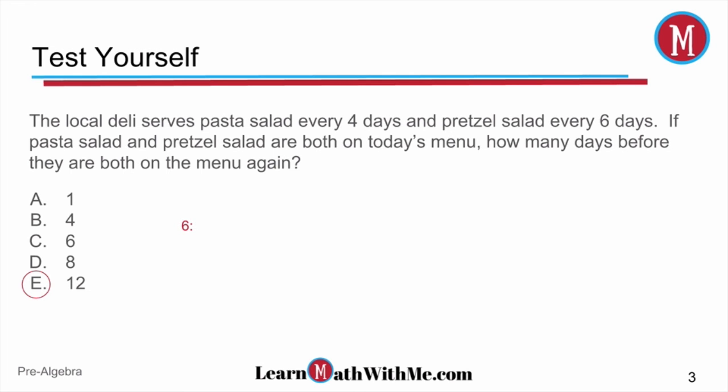So first, let's take a look at the pretzel salad. It occurs every six days. So let's write some multiples of six to see which days the pretzel salad will be on the menu. It will be on day six, day 12, day 18, and so forth. We'll stop right there and let's just see if maybe we can find a common multiple from these three terms.